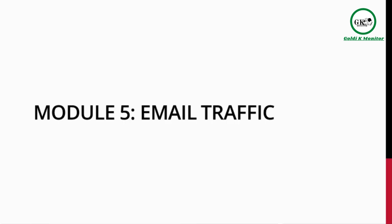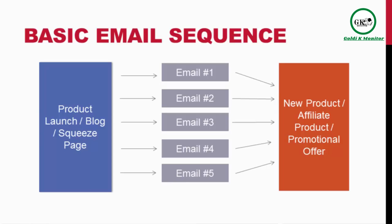Basically, we're going to be using email and taking advantage of other people's email lists. Here's the basic sequence: someone has a product or a blog, they're building their email list, and when someone joins, those people start getting an email sequence. They might receive an email once a day, once every other day, once a week — whatever they opted into. That person has some kind of email sequence, and those emails all promote something — sending traffic to a squeeze page, a sales page, or a blog post.